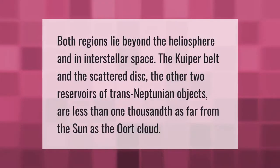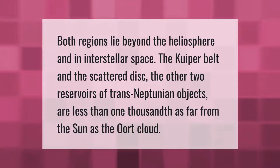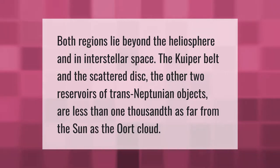Both regions lie beyond the heliosphere and in interstellar space. The Kuiper Belt and the scattered disk — the other two reservoirs of trans-Neptunian objects — are less than one-thousandth as far from the sun as the Oort Cloud.